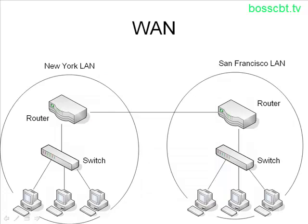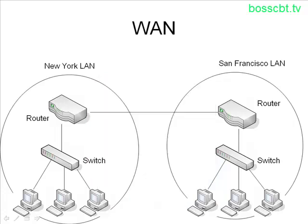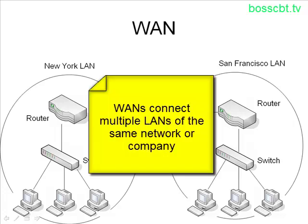So a wide area network is formed when you connect multiple local area networks that are geographically far apart. The primary characteristic of a wide area network is that geographically larger distances between equipment of the same network exist. These LANs belong to the same company or organization, so they want all the benefits as if they were geographically close together. That's where the wide area network comes in — it enables those benefits by connecting all the distant parts of the same network.